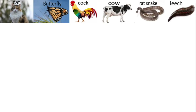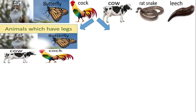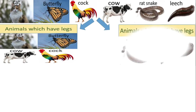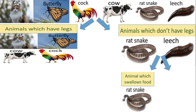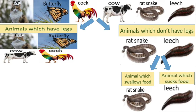There are six animals. They can be divided into two categories based on animals which have legs and animals which don't have legs. We can categorize cat, butterfly, cow and cock under animals which have legs. Ratty snake and leech can go under the category of animals which don't have legs. Out of ratty snake and leech, ratty snake can be categorized under animals which swallow food, and leech can be categorized under animals which suck food.